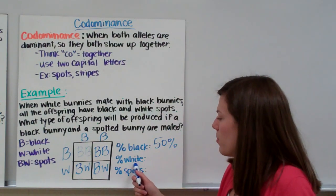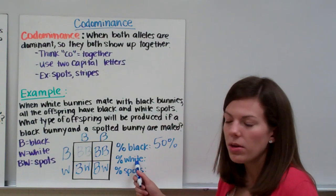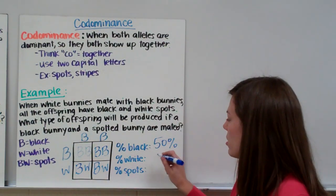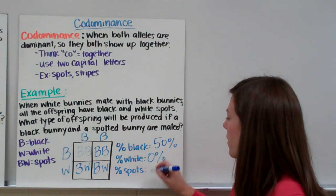Now our white bunnies would need to have a genotype of WW. We have no WW, so 0% of the bunnies are expected to be white.